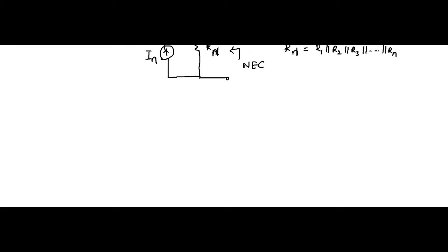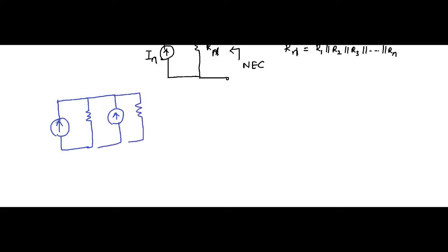Let us see how we got these results. We will take only two current sources and two resistors in our circuit — that arrangement — and we will see how the same thing applies for any number of current sources and any number of resistors present. So we have I1, R1, I2, R2, and we have to find the Norton circuit.